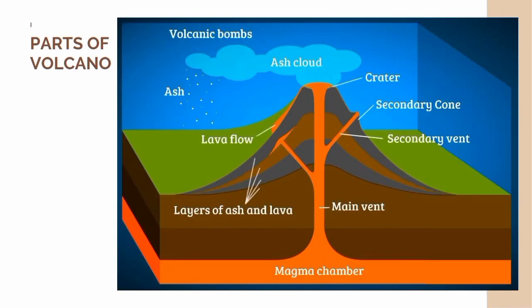But are you wondering what the parts of a volcano are? We have the magma chamber, where magma is stored. We have a main vent, where magma passes through towards the surface. We can also have a secondary vent, a secondary cone, a crater — the opening of our volcanic terrain — and a lava flow.